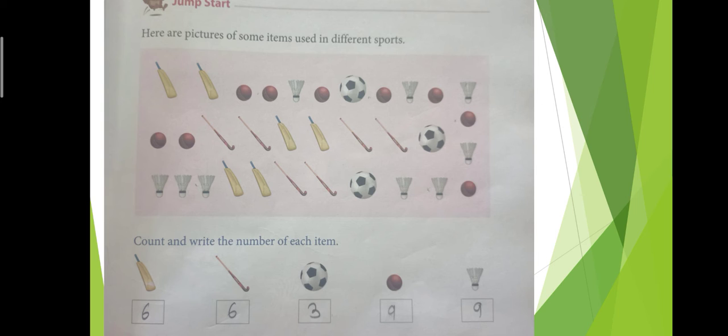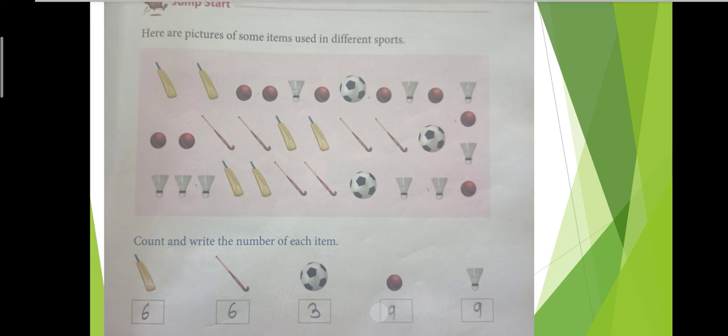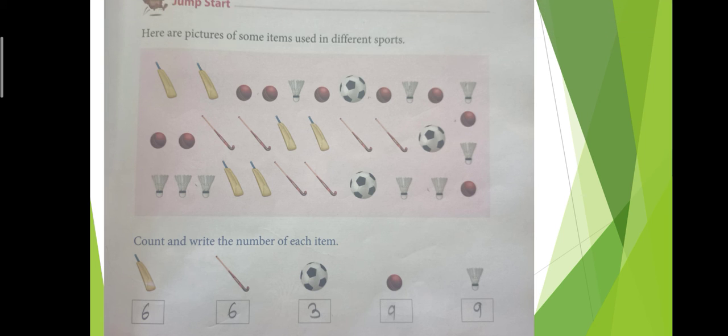So count and write the number of each item. Seven, eight, nine. We have nine tennis balls. How many shuttlecocks? One, two, three, four, five, six, seven, eight, nine. So this is your data handling, how we count.